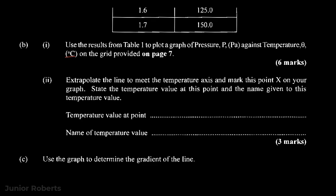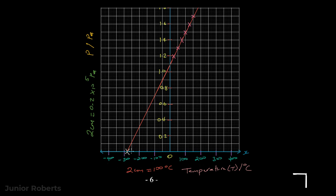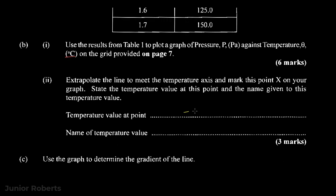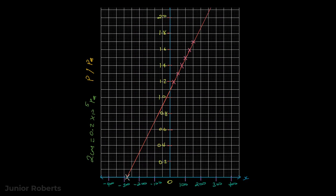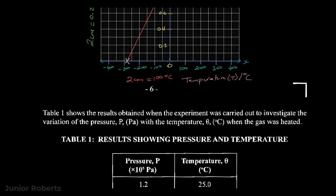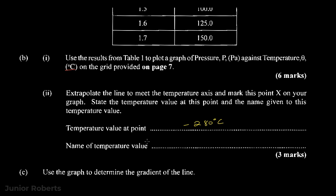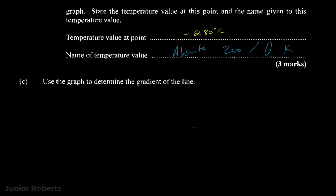Reading back, we see that the temperature value is approximately minus 280 degrees Celsius. Ideally we expect to get something in the range of 273 for this value. This is the temperature at which the pressure of the gas would be zero, and it relates to what we call absolute zero — the lowest possible temperature, which corresponds to zero kelvin.